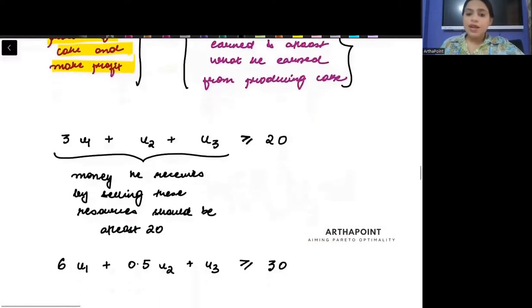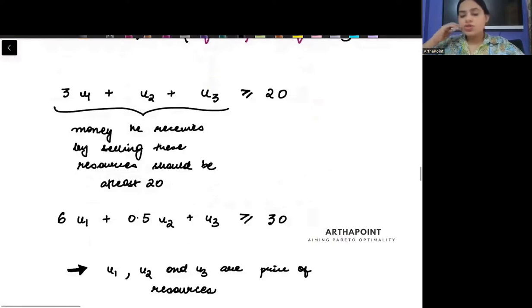Now the following equations will hold true. Suppose U1, U2, U3 are the price of the resources. U1 is the price of the flour, U2 is the price of the sugar, and U3 is the price of the butter.